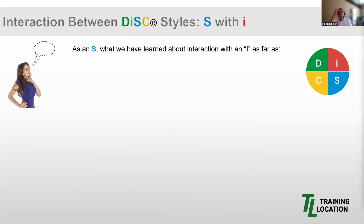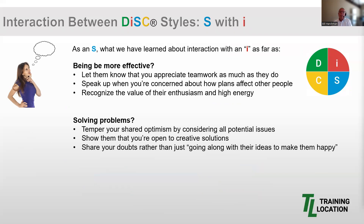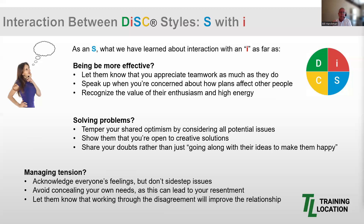As an S, here's what we've learned about interacting with an I more effectively. Let the I know that you appreciate teamwork as much as they do. Speak up when you're concerned about how plans affect other people. Recognize the value of the I's enthusiasm and high energy. When solving problems, temper your shared optimism by considering all potential issues, show the I that you're open to creative solutions, and share your doubts rather than just going along with their ideas to make them happy. In managing tension, acknowledge everyone's feelings but don't sidestep issues. Avoid concealing your own needs, as that can lead to resentment. And let the I know that working through disagreement will improve the relationship.